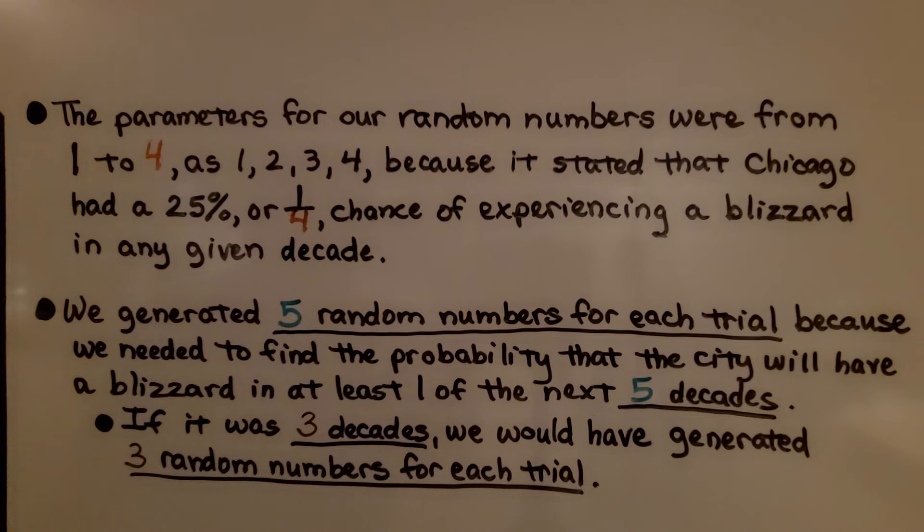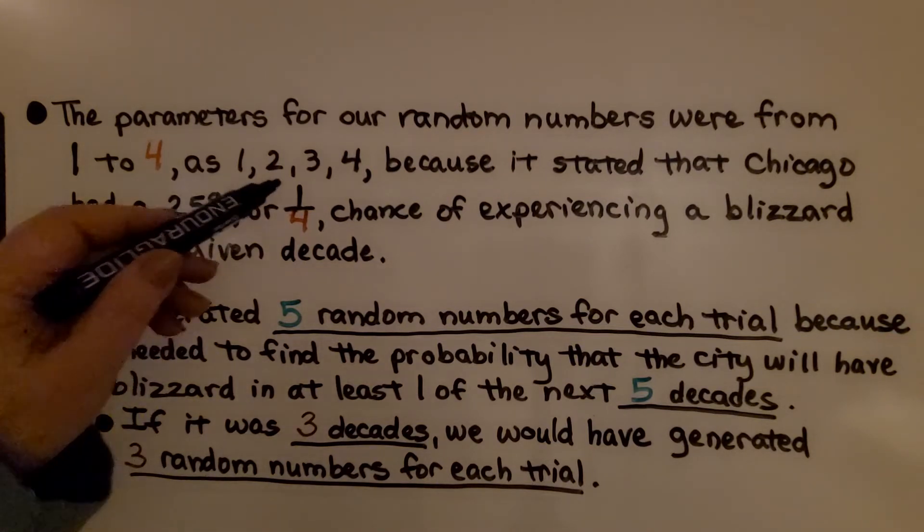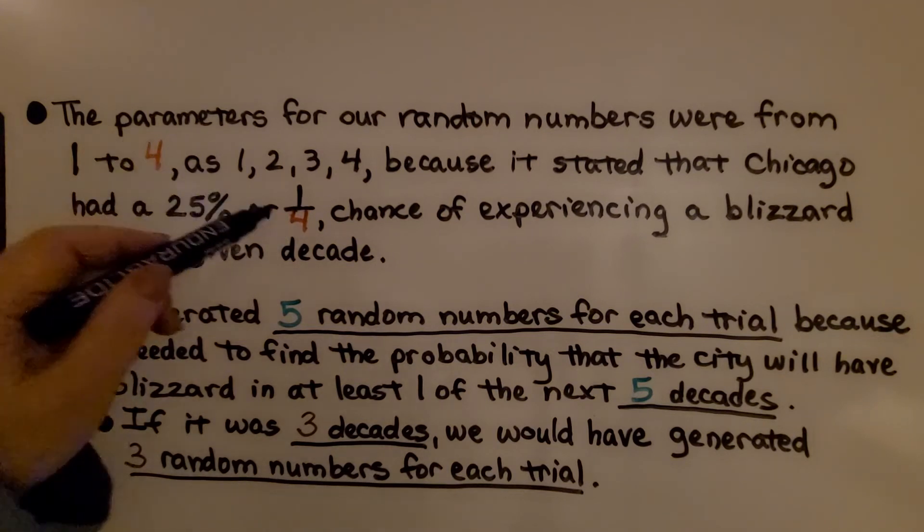The parameters, that's our boundaries, for our random numbers were from one to four, as one, two, three, four, because it stated that Chicago had a 25% chance, or one-fourth chance, of experiencing a blizzard in any given decade.